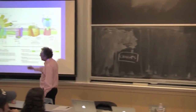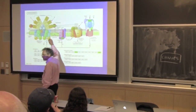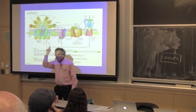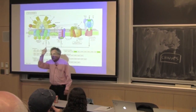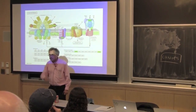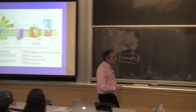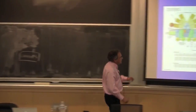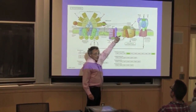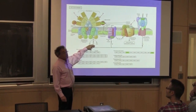Pop an electron off a manganese atom. The manganese atom, missing an electron, sees a water molecule. The water molecules drip in like a stream through a straw — one at a time. One photon, one electron, four times, until you generate an O₂. The O₂ is finally released, but the electrons went through this electron carrier system. The protons didn't — they are deposited on one side of the membrane.